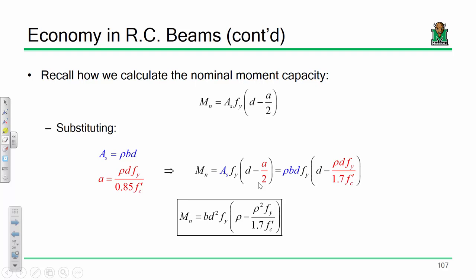Now let's look at this from a moment capacity standpoint. The nominal moment capacity is As fy times (D minus A/2). Making the same substitutions — As = ρBD and A = ρD·fy / (0.85 fc') — after some algebra, I arrive at the boxed expression. There's nothing different — it's the exact same thing — but I've reformatted it in a way that really helps us out.